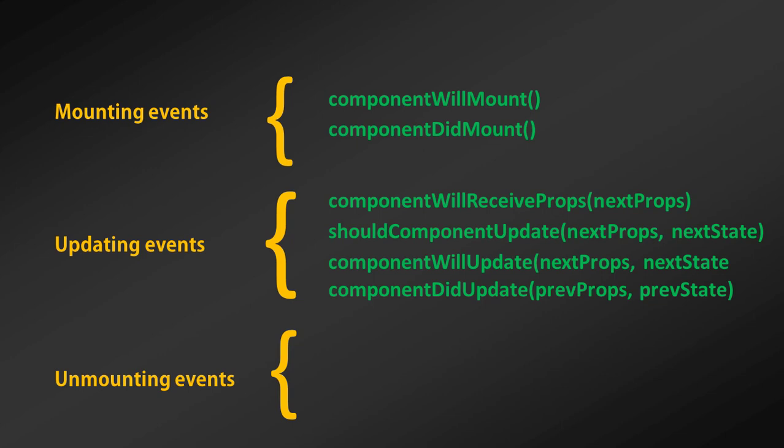Just after that, we have the third category which is unmounting. In this category, we have the componentWillUnmount function. This function lets you unbind and detach any event listeners or do other cleanup work before the component is unmounted. Each of these functions gives you more granular control over a component.